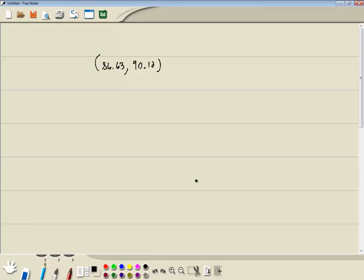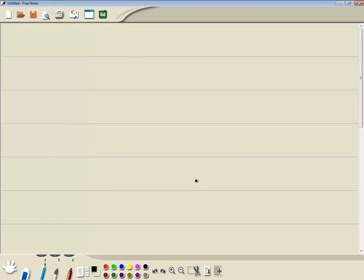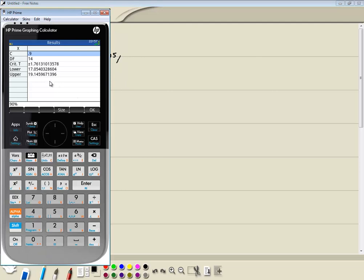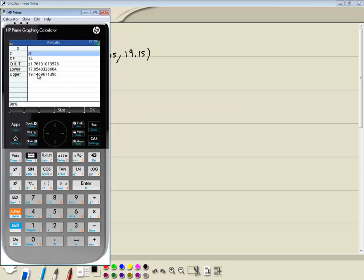Let me come over here. And our answer rounded to two decimal places would be 17.05 comma 19.15. Assuming my eyes aren't great, so hopefully I'm reading that right.